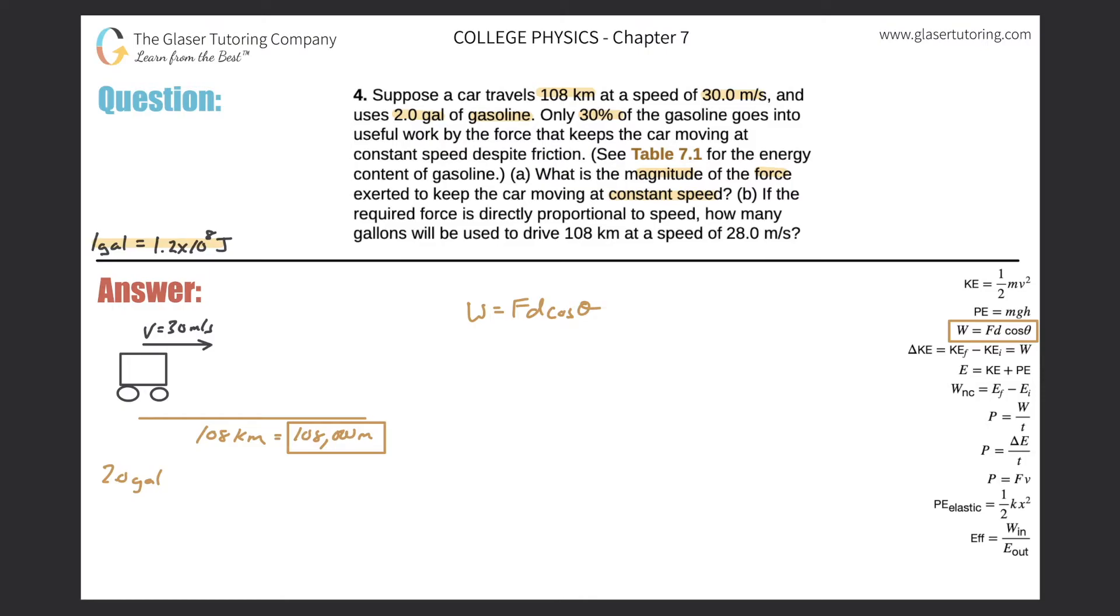Well, they told us it uses two gallons of gasoline. It uses two gallons of gasoline and every one gallon produces 1.2 times 10 to the eighth joules. And only 30% of that gasoline goes into useful work. I think we can see how to piece this together. So why don't we start here? Let's start with, so we got two gallons of gasoline.